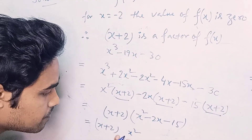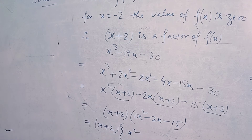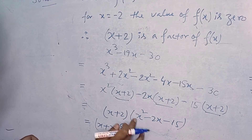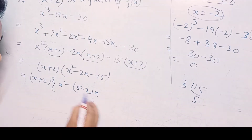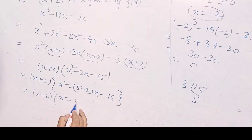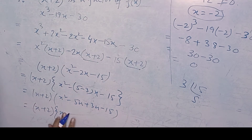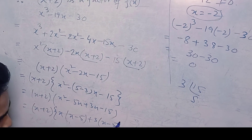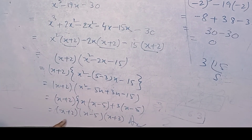We now factorize x squared minus 2x minus 15 by the middle term method. 15 into 1 equals 15, and 15 breaks into 5 and 3. So we split: x squared minus 5x plus 3x minus 15, giving x(x minus 5) plus 3(x minus 5). Therefore the final answer is x plus 2, x minus 5, and x plus 3.